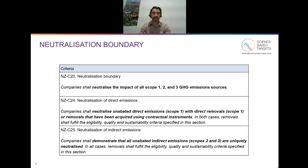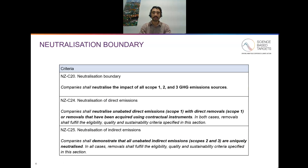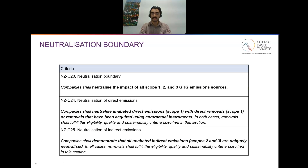One of the first things to understand is the neutralization boundary of a company's net zero target. Companies shall neutralize the impact of all scope one, two, and three greenhouse gas emissions sources. The second criteria is that companies shall neutralize unabated direct emissions with direct removals or removals acquired using contractual instruments. The third criteria is that companies shall demonstrate that all unabated indirect emissions — those in scope two and three — are uniquely neutralized. So there is a difference between the criteria for neutralizing scope one emissions versus scope two and three emissions.